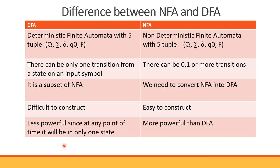The key differences between NFA and DFA: in DFA there can be only one transition from a state on an input symbol — one state, one input symbol, one transition. In NFA there can be zero, one, or more transitions. DFA is a subset of NFA, meaning every DFA is also an NFA. We can convert NFA into DFA.